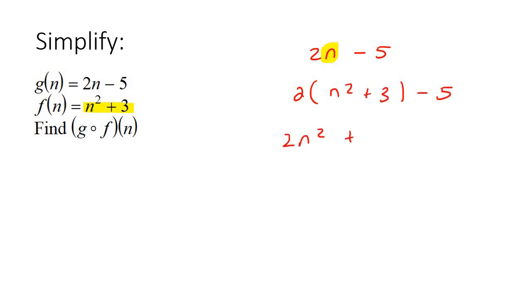And so you end up with 2n squared plus 6, take away 5. Put these together. So it becomes 2n squared plus 1. And so let's just write that down.